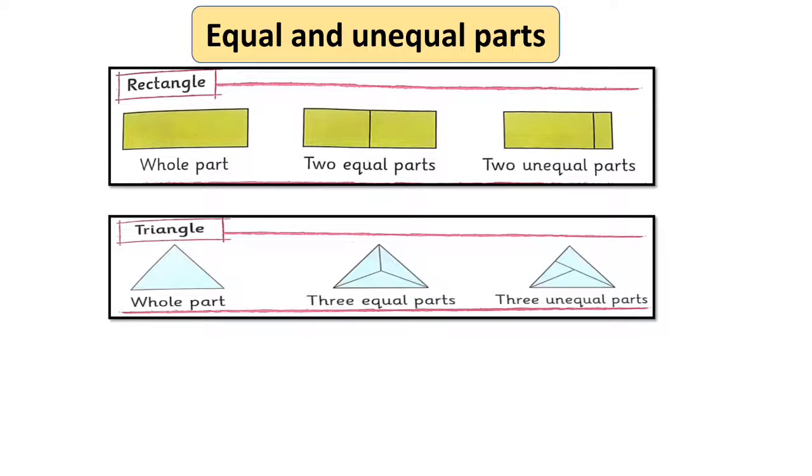The second one has three equal parts. Look at the triangle. This triangle shows two equal parts and in the last triangle it has three parts but they are not equal.